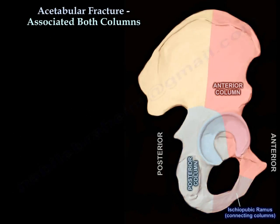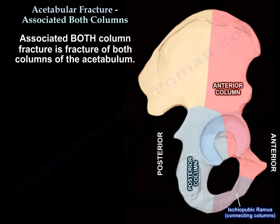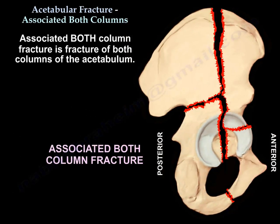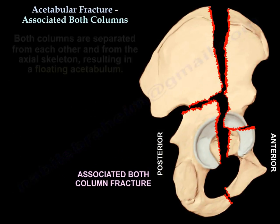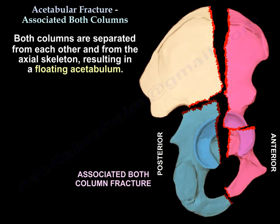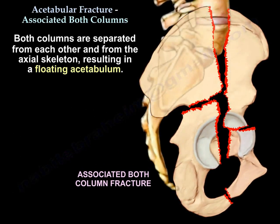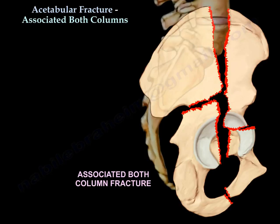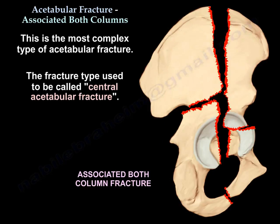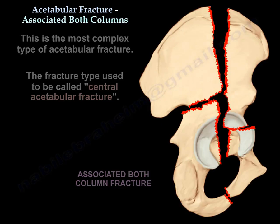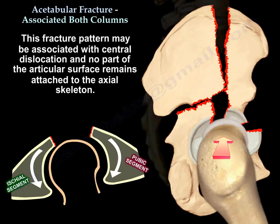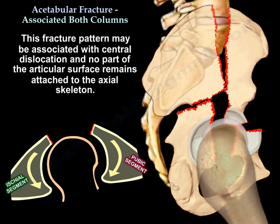Associated Both Column Fracture is a fracture of both columns of the acetabulum. Both columns are separated from each other and from the axial skeleton, resulting in a floating acetabulum. It is the most complex type of acetabulum fracture, formerly called central acetabulum fracture. It may have a central dislocation, and no articular surface remains intact with the axial skeleton.